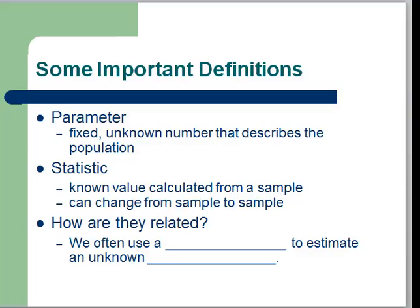It has a value, but that value is unknown. So a parameter is a fixed unknown number that describes the population. The reason it's unknown is that we can't get the information from the entire population to figure out what this percentage is.